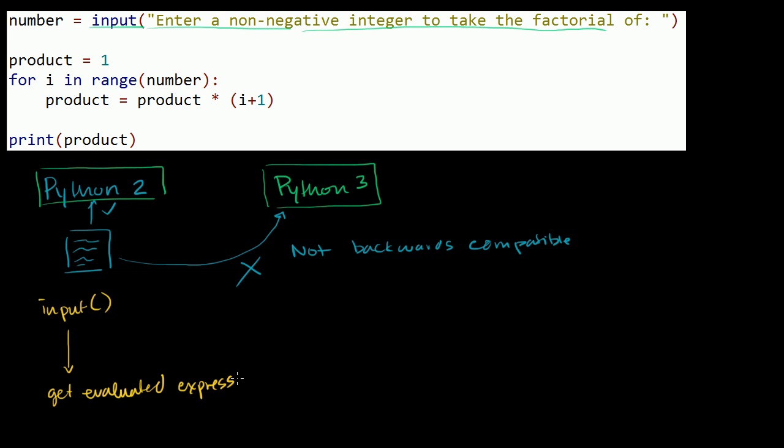So like we saw in the last few examples, if the user puts in a 4, then the number 4 will be put in the variable number. If the user inputs literally 3 plus 4, then the number 7 will be put into the variable number.